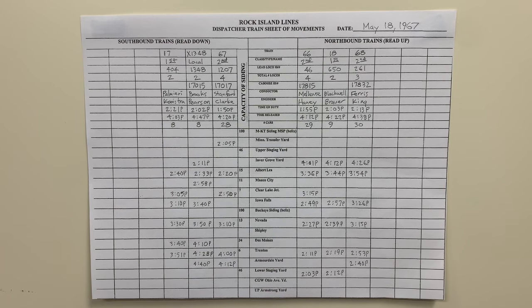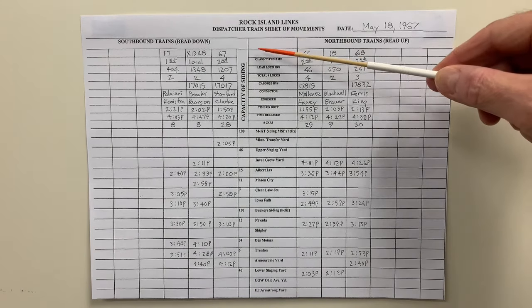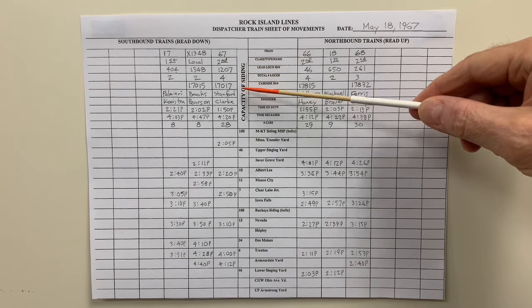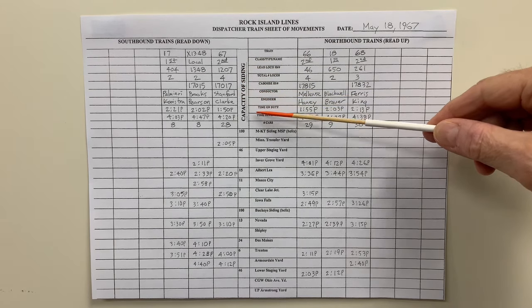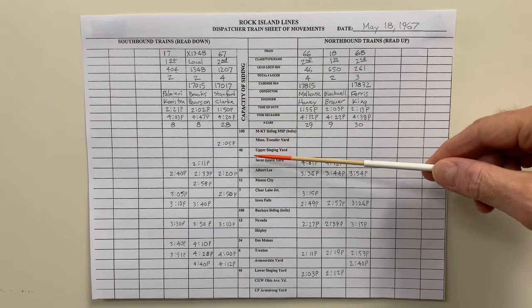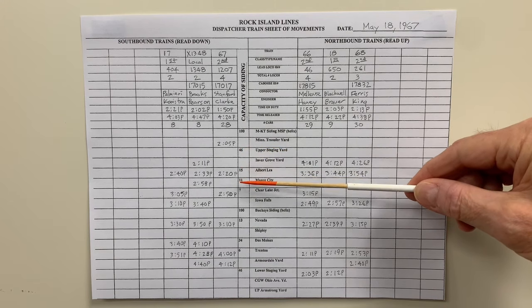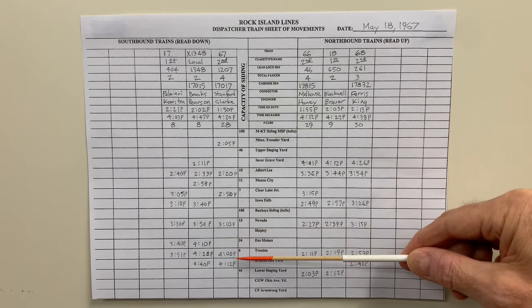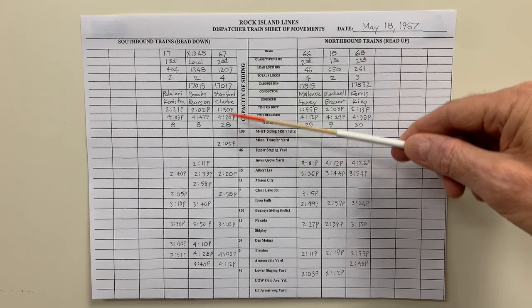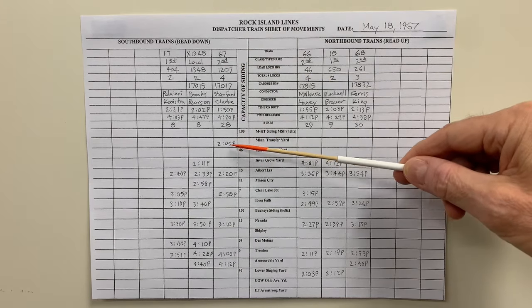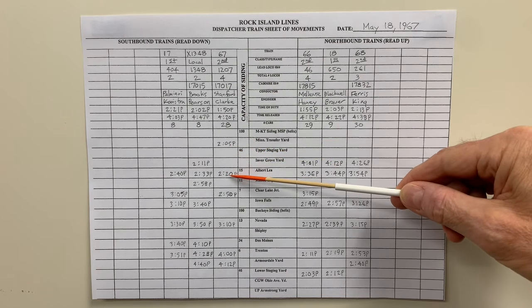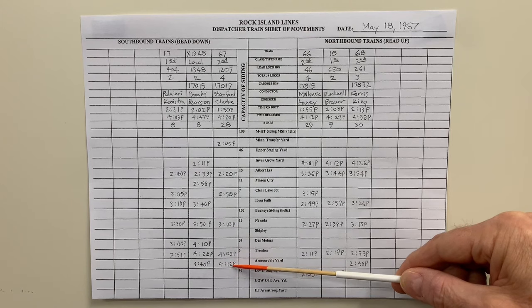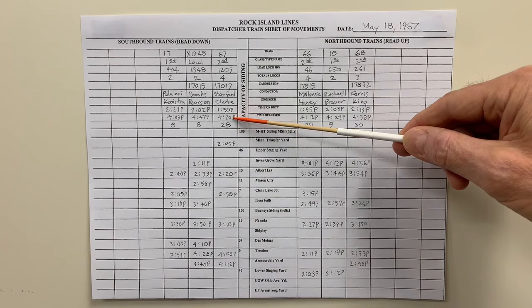This is the dispatcher train sheet of movements. The dispatcher uses this to keep track of the train and information about it — locomotive and caboose number, the crew, time on duty, time released, etc. Each time the train OSs their location — OS meaning on sheet — the dispatcher will put that time on his sheet to track how the train is progressing. In this case, southbound train 67 was at Albert Lee at 2:20 p.m., at Nevada at 3:10 p.m., and at Armadale Yard at 4:12 p.m. concluding its run, with the crew released at 4:20 p.m.